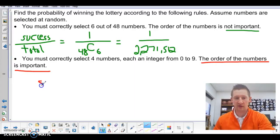So once again, we think about the idea of success versus total. And my success, in this case, again, there's only one way to be successful. Pick out the right 4 numbers in order.